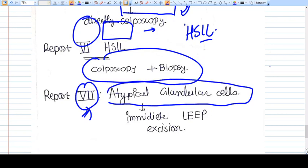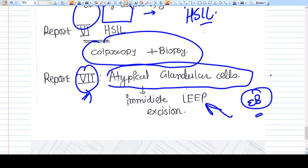Report number seven suggests atypical glandular cells of the endometrial or endocervical tissue. We should directly go for excision of the endocervix and also get an endometrial biopsy. We should go for excision methods like LEEP.